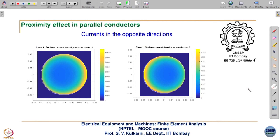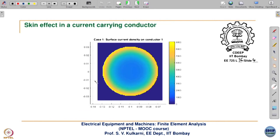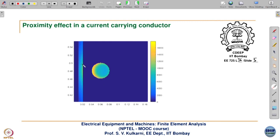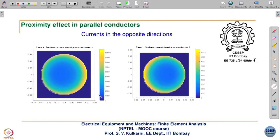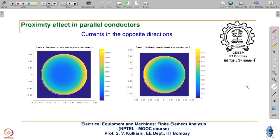The opposite case has currents in opposite directions. This geometry is similar to the previous case - currents concentrate in the faces which are facing each other. The same geometry applies with dot and cross for the respective current directions, and the same physical reasoning for current concentration applies.